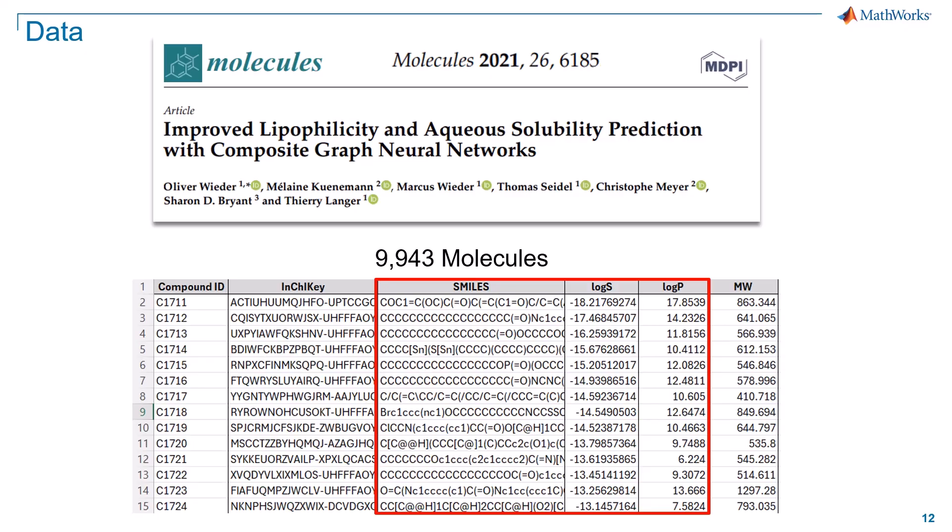This database contains 9,943 molecules along with their corresponding water solubility and lipophilicity values. These parameters are crucial in molecular design and drug discovery, as they significantly impact the compound's pharmacokinetics and bioavailability. By understanding and optimizing these properties, one can enhance the drug's therapeutic functions through improved absorption, distribution, and interaction with biological targets.